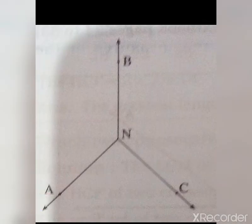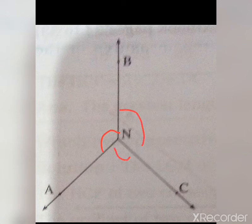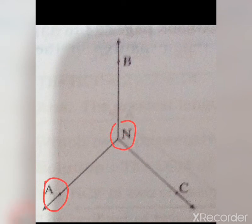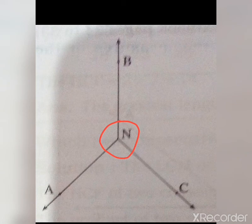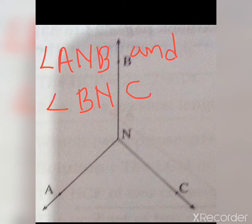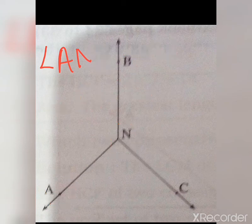In this next example there are three angles. Consider angle ANB and angle BNC. Here, AN is a common arm and N is the common vertex. So angle ANB and angle BNC are adjacent angles.